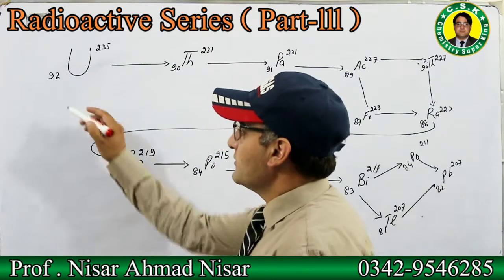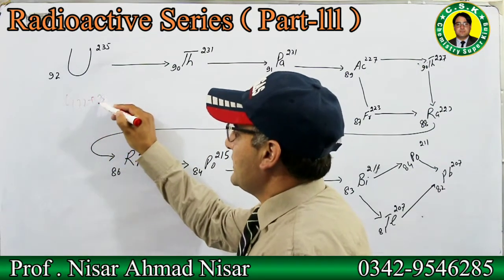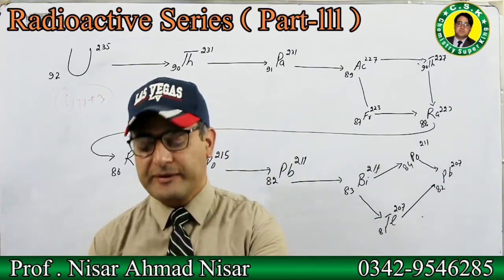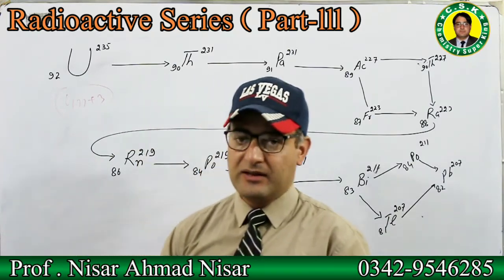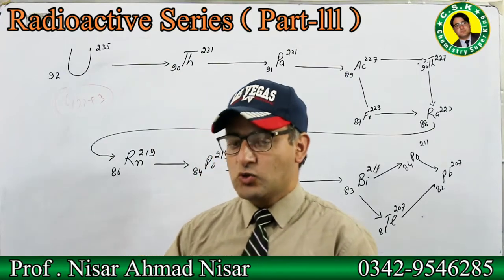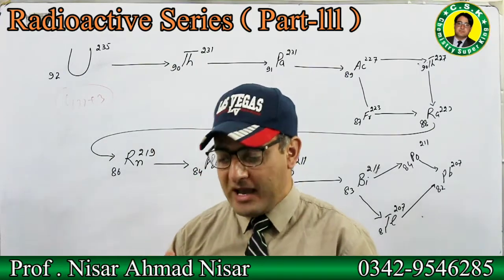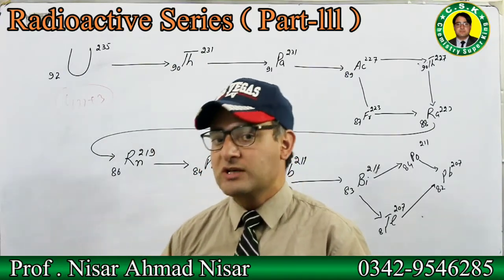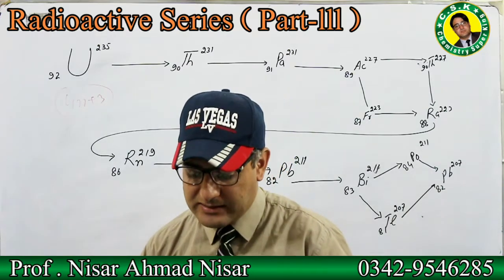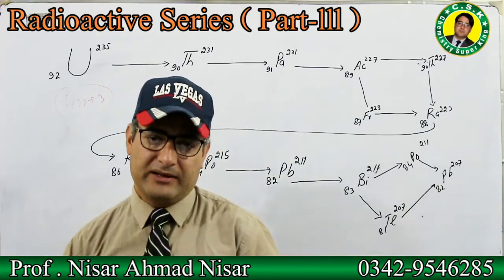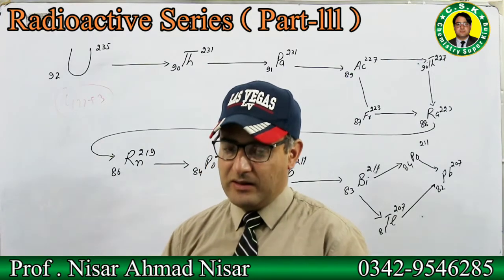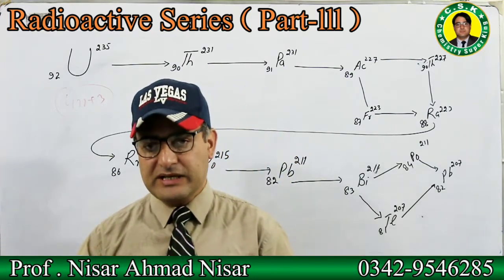The actinium series is also called the 4N+3 series. It is called the 4N+3 series because when we divide the mass number of any member of this series by 4, we get a remainder of 3.